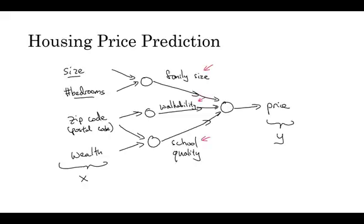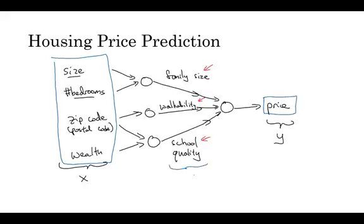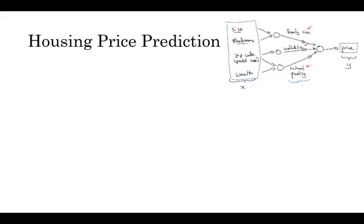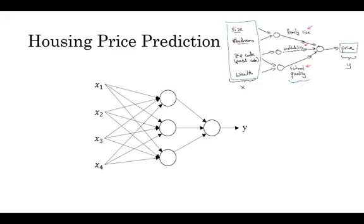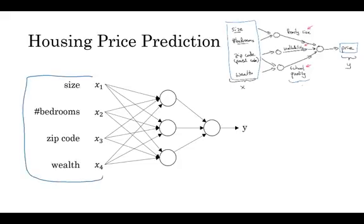Part of the magic of a neural network is that when you implement it, you need to give it just the input x and the output y for a number of examples in your training set. And then all these things in the middle, it will figure out by itself. So what you actually implement is this, where here you have a neural network with four inputs. So the input features might be the size, number of bedrooms, the zip code or postal code, and the wealth of the neighborhood. And so given these input features, the job of the neural network will be to predict the price y.